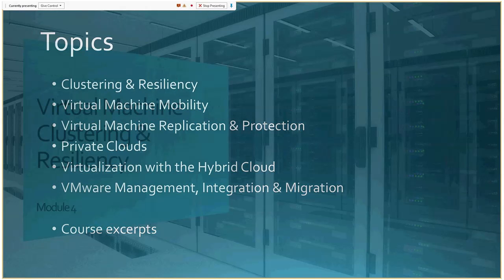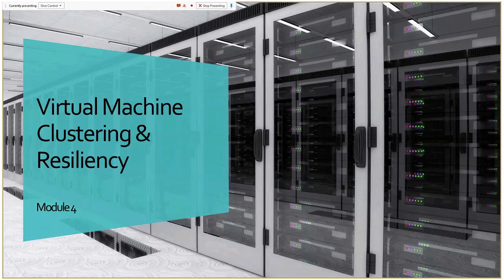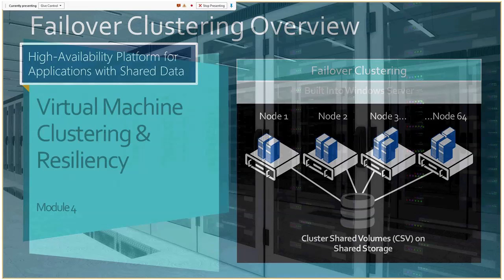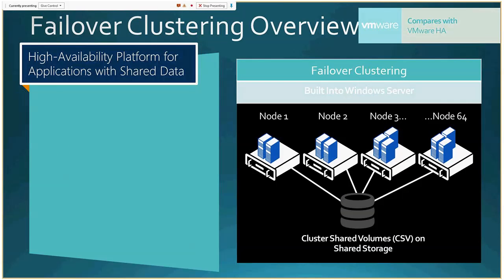The first topic is virtual machine clustering and resiliency — how to get your virtual machines available no matter what. This is part of failover clustering, comparable to VMware's HA high availability platform. Clustering failover is now built right into the server operating system, and clustering, which previously required hardware investments that put it out of price range for small businesses, has changed. You can now do this with inexpensive hardware you may already have. Currently, you can have up to 64 nodes, handling up to 8,000 virtual machines — a very large cluster configuration.